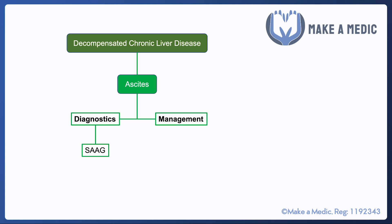From a diagnostic point of view, the serum ascites albumin gradient (SAAG) is really useful to figure out what is causing the ascites. There is a cutoff value of 11.1 grams per litre. If the value is less than 11.1 grams per litre, it generally suggests an exudative cause such as infection, inflammation, or malignancy.